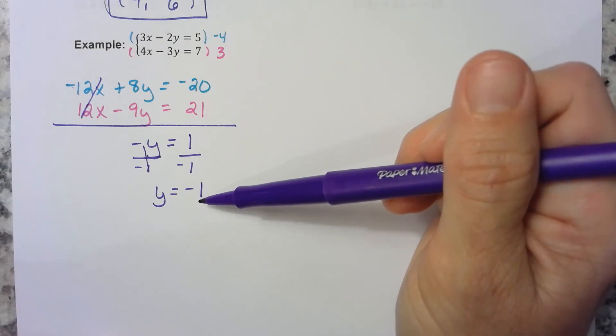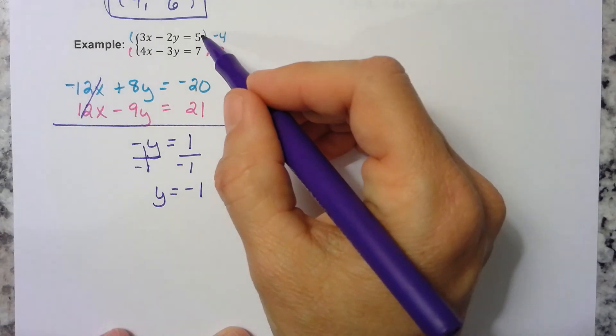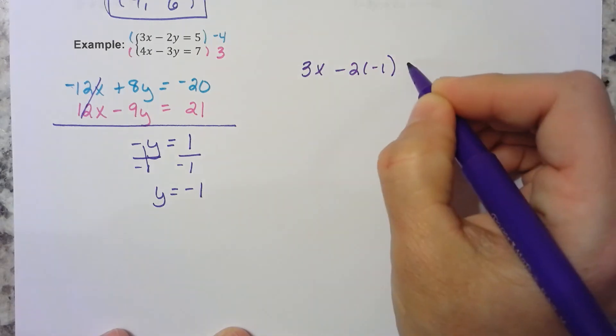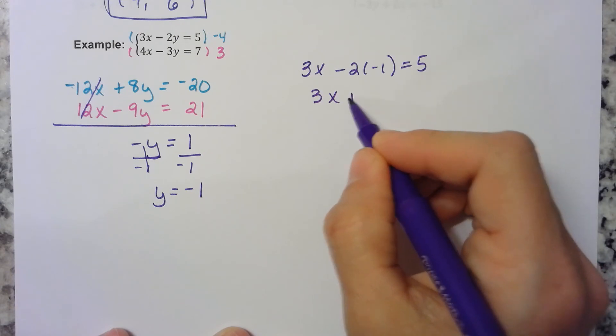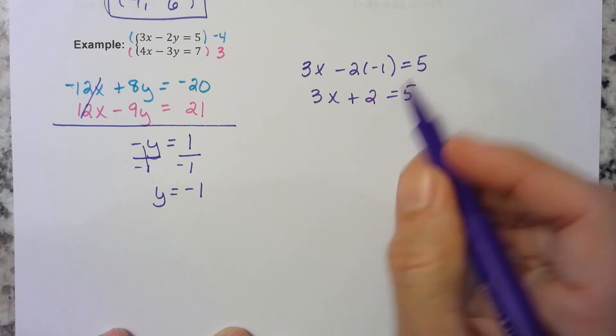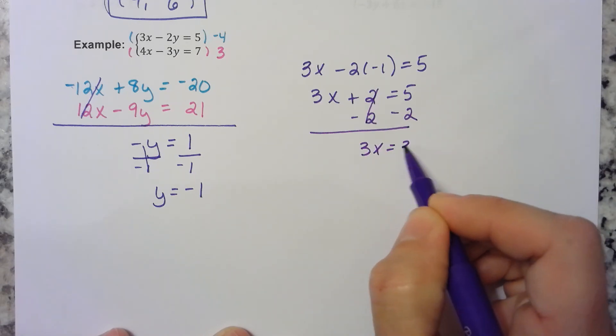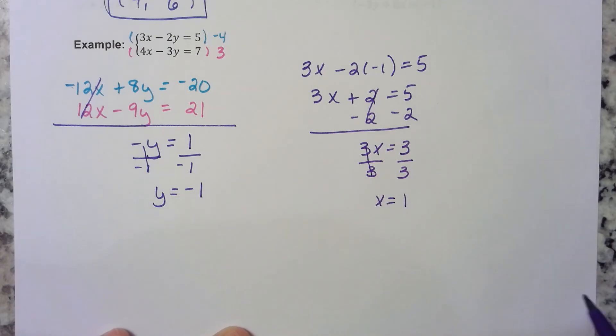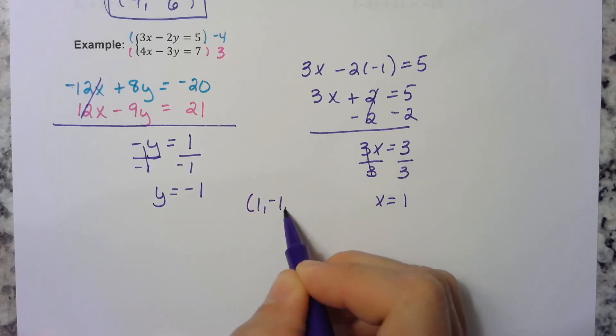It doesn't matter which one you use. Maybe I'll just use the one with the smaller numbers. So I'll put it back into the first equation. So we have 3x minus 2 times negative 1 is equal to 5. Well, negative 2 times negative 1 is positive 2. We subtract 2 from both sides. So 3x is equal to 3. Divide both sides by 3. So x is equal to 1. Our solution is 1, negative 1.